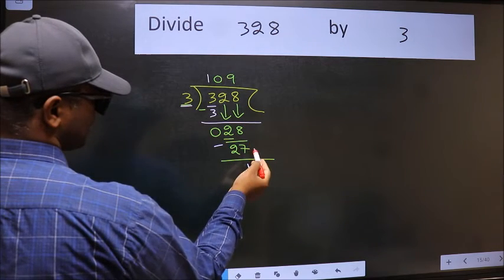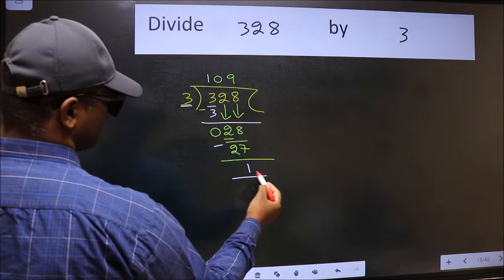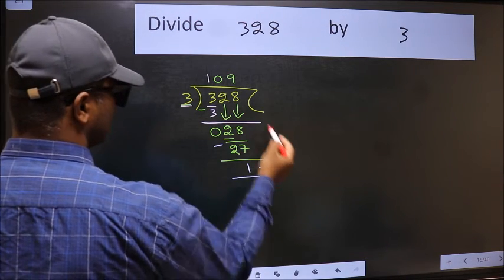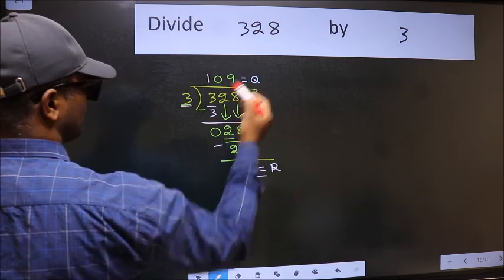No more numbers to bring down. So we stop here. This is our remainder and this is our quotient.